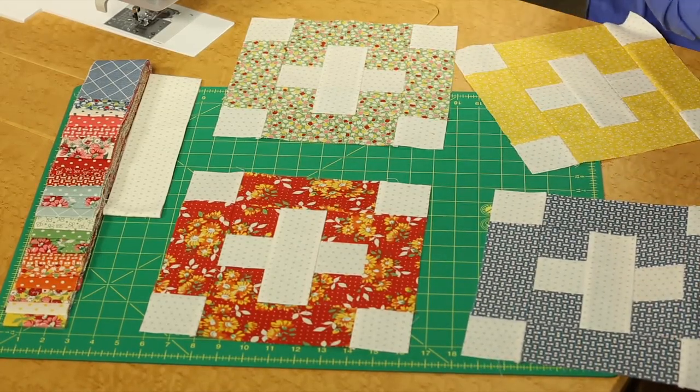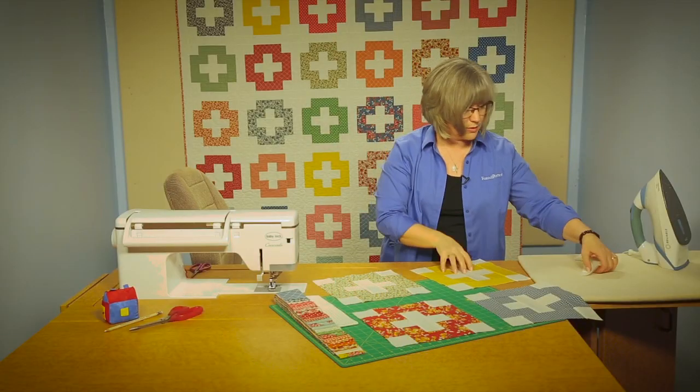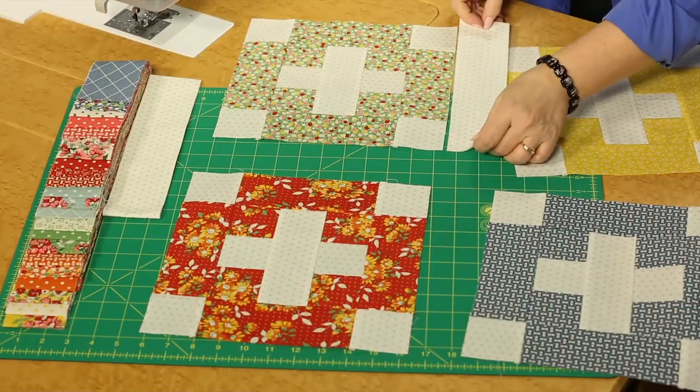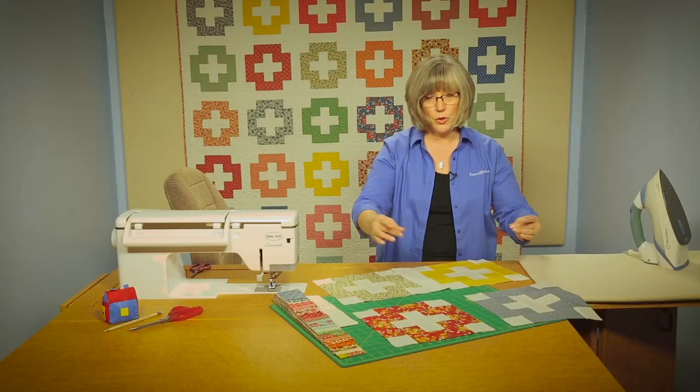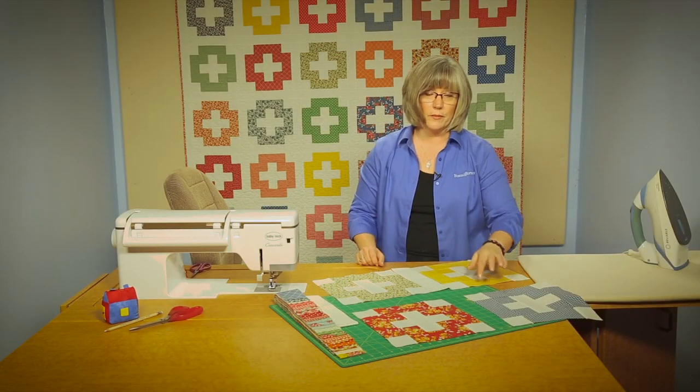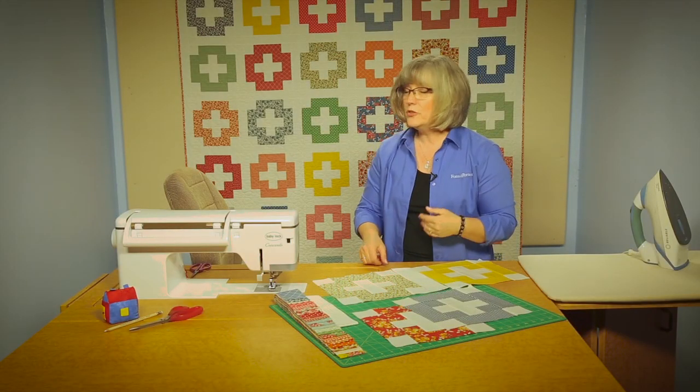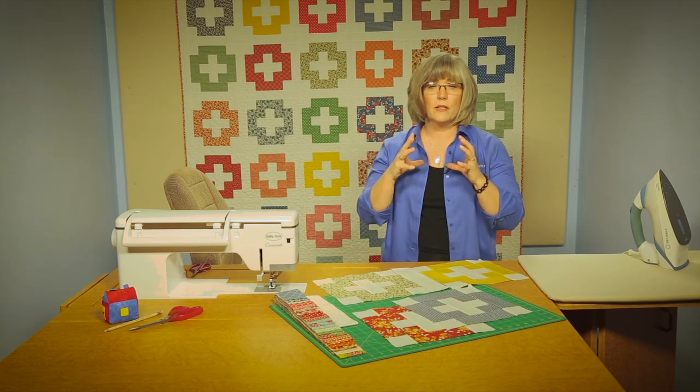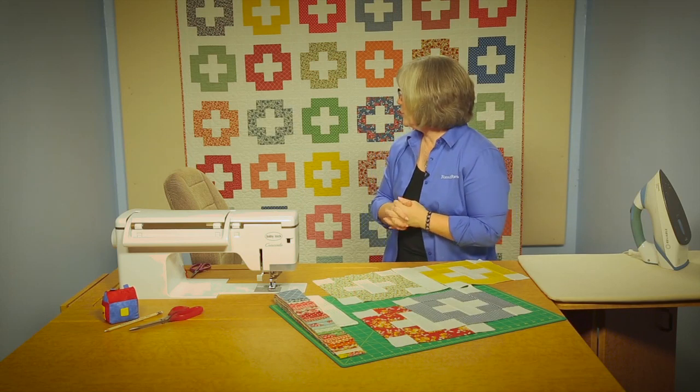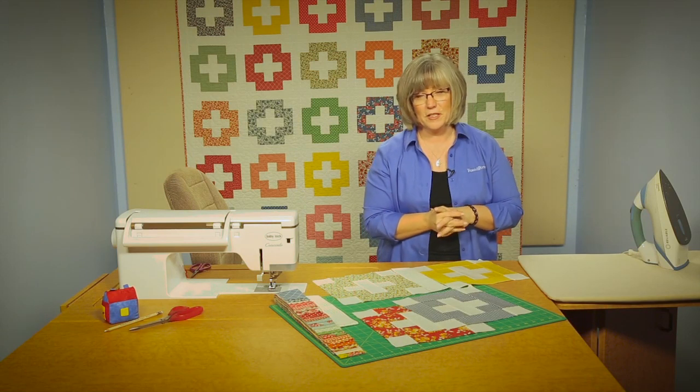And then you're going to be adding sashing blocks to create your rows. So you're going to join them like this into rows and then join the rows with long bars in between. When you're all done, you've got one piece that goes all the way around the outside so that the blocks actually float in the quilt. And finish it with a fun red or pink binding.